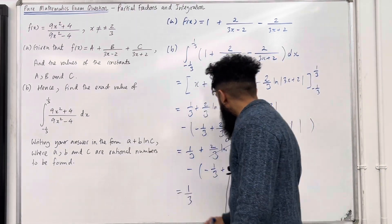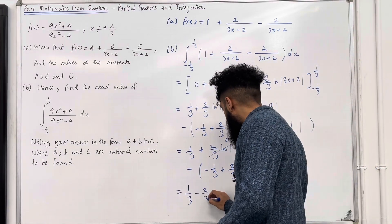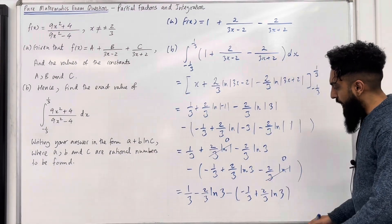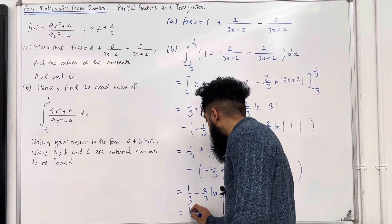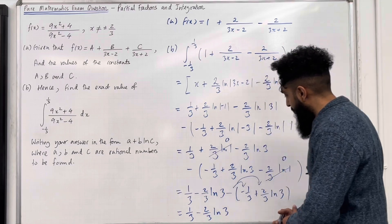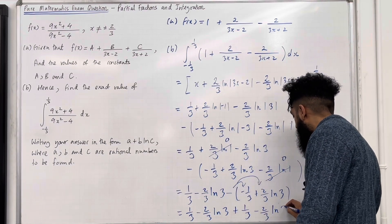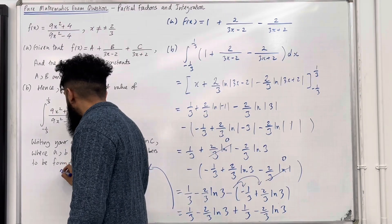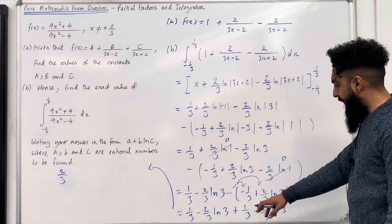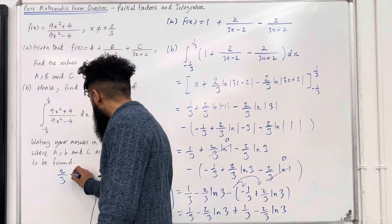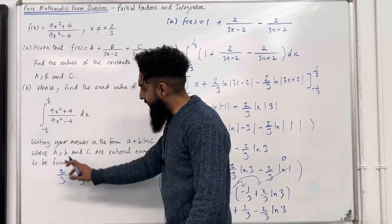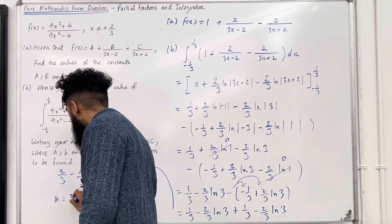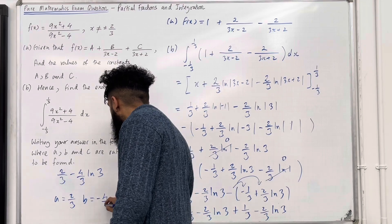Simplifying: I've got 1 over 3 minus 2 over 3 ln 3, take away (minus 1 over 3 plus 2 over 3 ln 3). Expanding the bracket gives 1 over 3 minus 2 over 3 ln 3 plus 1 over 3 minus 2 over 3 ln 3. So 1 over 3 plus 1 over 3 is 2 over 3, and minus 2 over 3 ln 3 minus 2 over 3 ln 3 is minus 4 over 3 ln 3. So the exact value is 2 over 3 minus 4 over 3 ln 3, meaning a equals 2 over 3, b equals minus 4 over 3, and c equals 3.